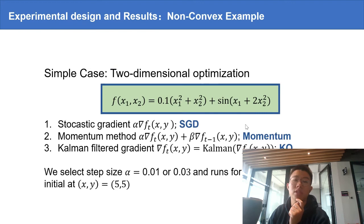First, we study a simple case. We define a two-dimensional non-convex function. Given the same starting points, we would like to find its minimum using three methods and two different step size choices.